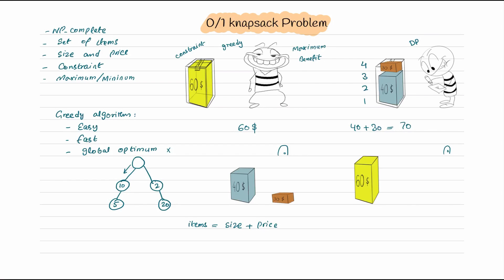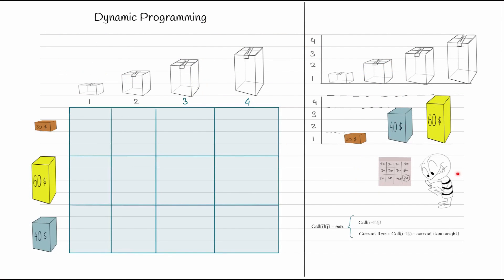The second friend, who was writing on a piece of paper, was using dynamic programming. We will see what he was writing and how he decided to pick the two items instead of the single expensive one to get maximum benefit. Dynamic programming gives us a global optimum solution for the zero-one knapsack problem.